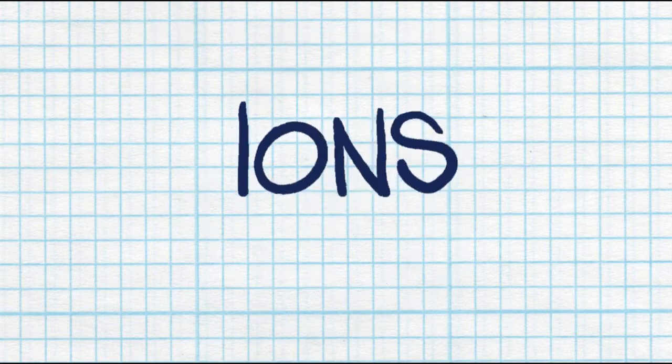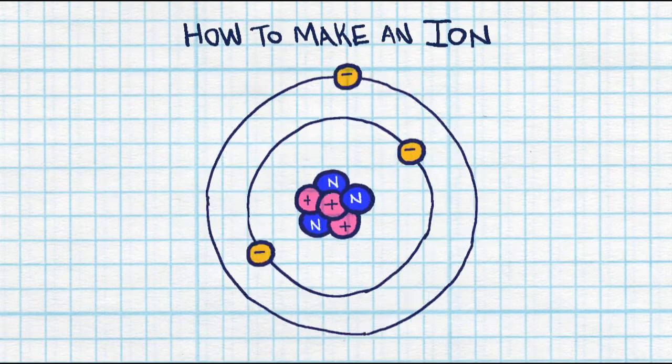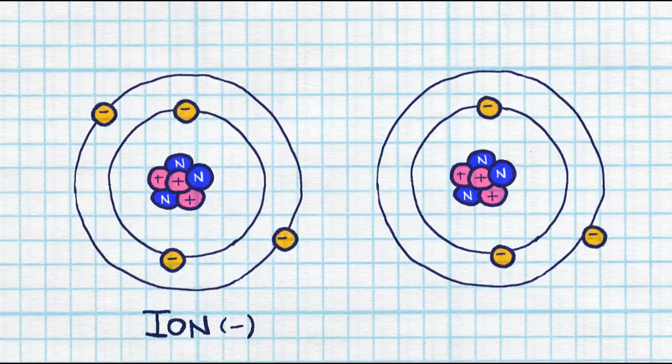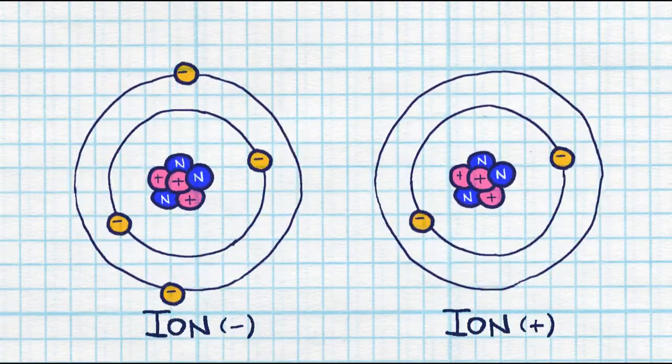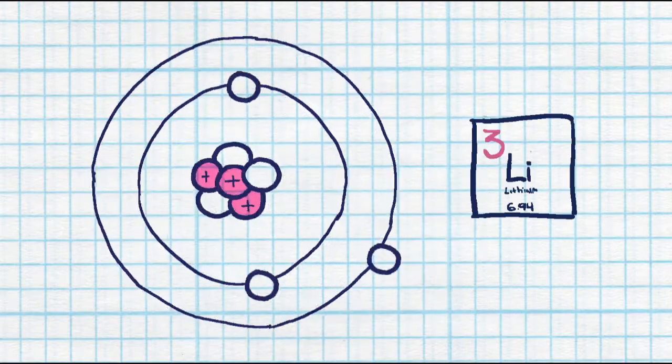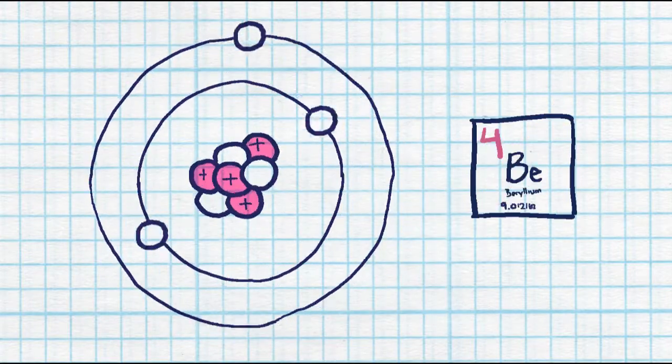If you're asked to make an ion, that means you're asked to make an atom that has a charge on it, either positive or negative. You're only going to be adding and removing electrons. When you hear ion, think electron. We don't ever touch the protons, because as soon as you change the number of protons, you're changing the element.